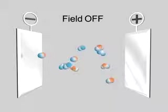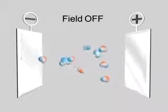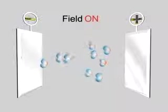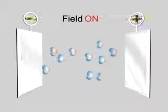With the field off, the molecules are oriented randomly, but with it on, their poles become oriented toward the oppositely charged plates.